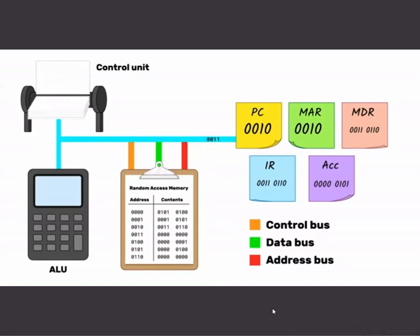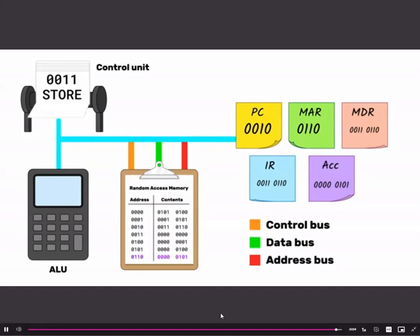It uses the opcode 0011, which is STORE, and the operand 0110, which is the last address in the RAM shown. So this cycle takes the results of the addition in the accumulator and stores it back into RAM.